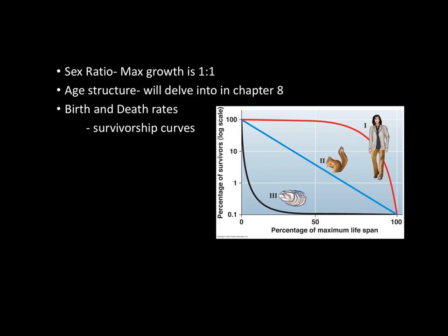Sex ratio: maximum growth potential would be a one-to-one ratio. Age structure refers to the age groups or age brackets within the population — we'll go more in-depth in Chapter 8, but this chapter gives a general outlook. Birth and death rates are graphed on survivorship curves, which show relative survivors compared to maximum life expectancy across three different sections.